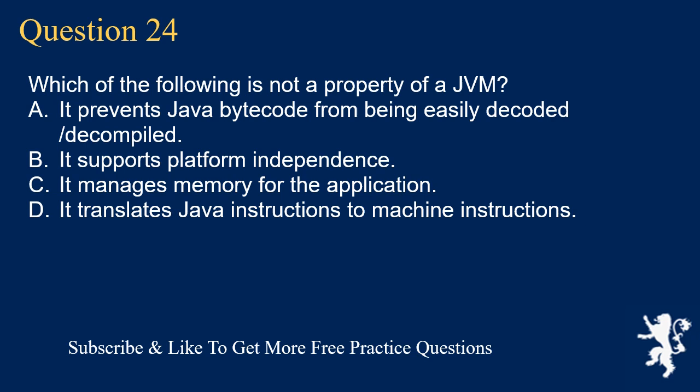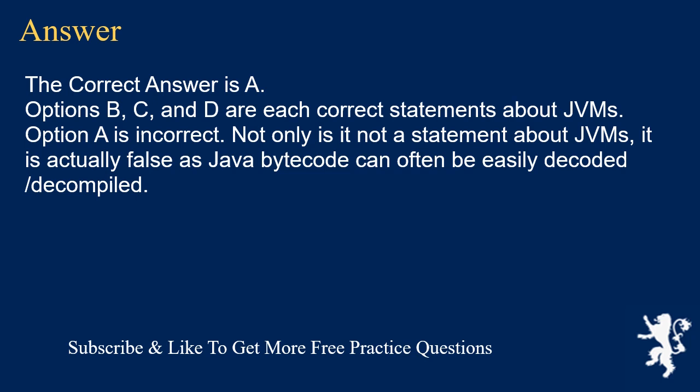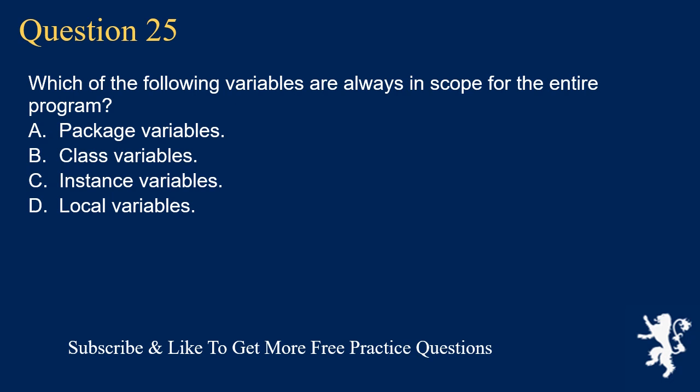Question 24: Which of the following is not a property of a JVM? A) It prevents Java bytecode from being easily decoded/decompiled. B) It supports platform independence. C) It manages memory for the application. D) It translates Java instructions to machine instructions. The correct answer is A. Options B, C, and D are correct statements about JVMs. Option A is incorrect — not only is it not a property of JVMs, it is actually false as Java bytecode can often be easily decoded and decompiled.